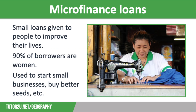We are going to finish off this video by considering microfinance loans, which are in contrast to large scale borrowing. Microfinance banks such as Grameen Bank in Bangladesh have been set up to loan small amounts of money to people so they can improve their lives. The borrowers are often people who don't have access to traditional banks, and over 90% of those who borrow money are women.